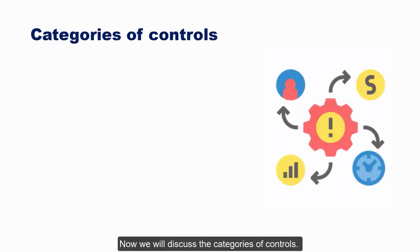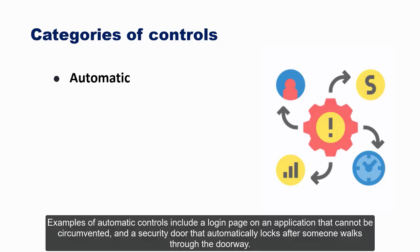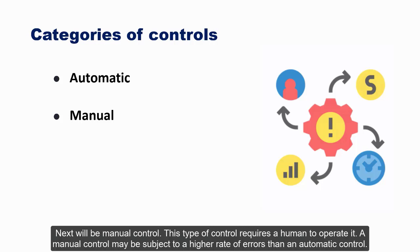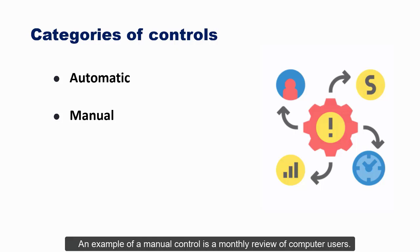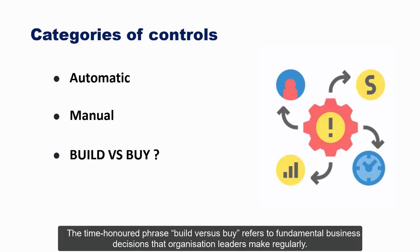There are two categories of controls. Automatic controls perform their function with little or no human judgment — examples include a login page that cannot be circumvented and a security door that automatically locks. Manual controls require a human to operate and may be subject to a higher rate of errors — an example is a monthly review of computer users. The time-honored 'build versus buy' decision refers to whether an organization builds assets in-house or buys a finished product from another organization.